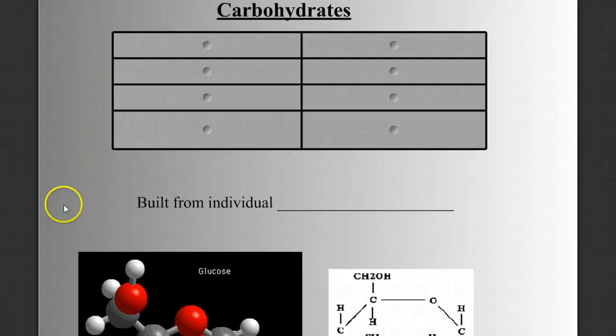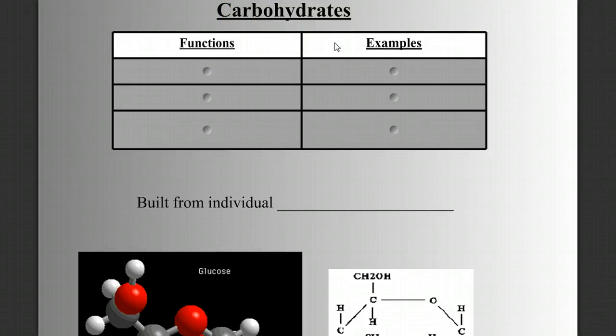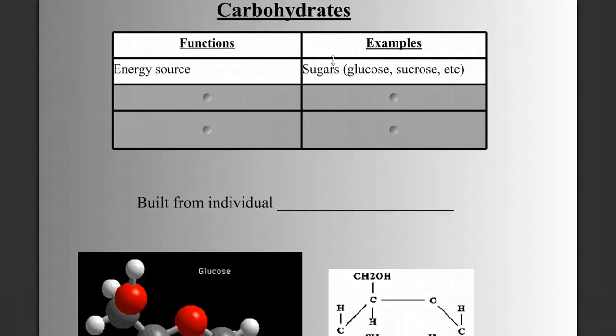Let's start with carbohydrates — we'll talk about the functions and some examples. Carbohydrates are known to be a good energy source. Things such as sugars: glucose, sucrose, fructose, galactose, maltose — they're all simple sugars, monosaccharides and disaccharides.